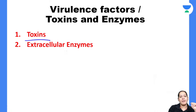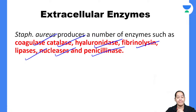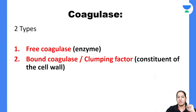After toxins, we have enzymes. The important enzymes present in Staphylococcus include coagulase, catalase, hyaluronidase, fibrinolysin, lipase, nuclease, and penicillinase. The most important are coagulase and catalase. Coagulase is of two types: free coagulase (the enzyme itself) and bound coagulase, also known as clumping factor.